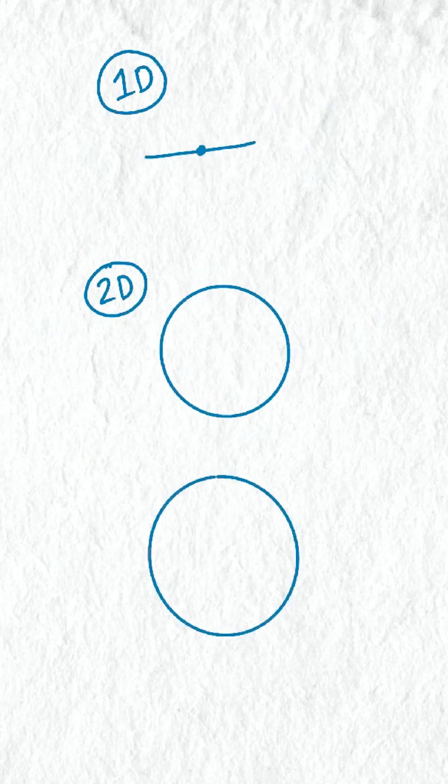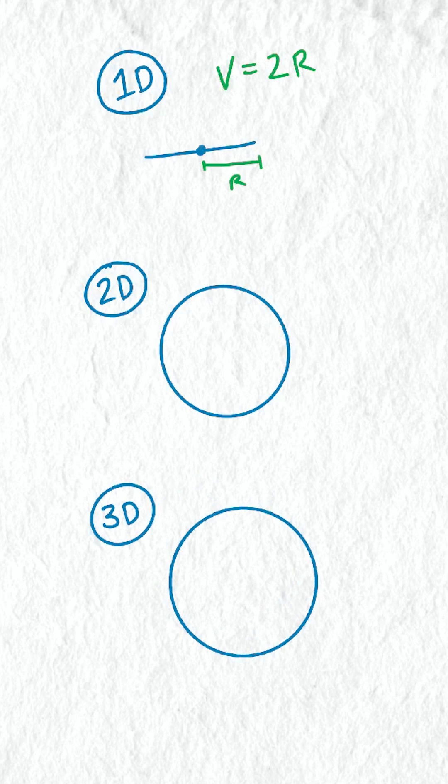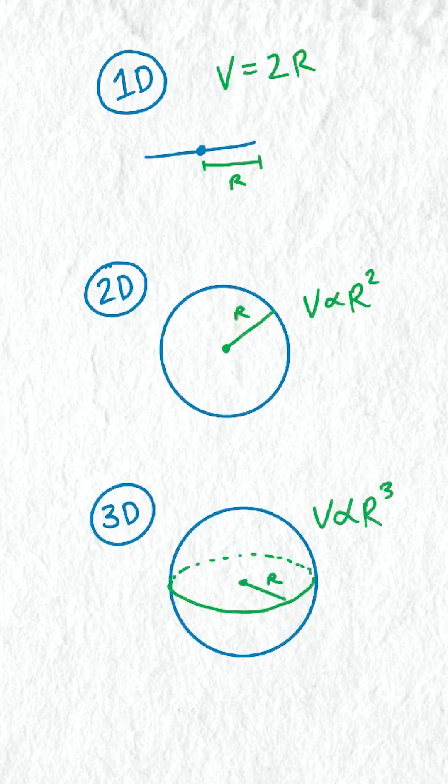in one dimension the volume would be two times the radius. In 2D it would be proportional to the radius squared. And in 3D the radius cubed, which is what we see experimentally.